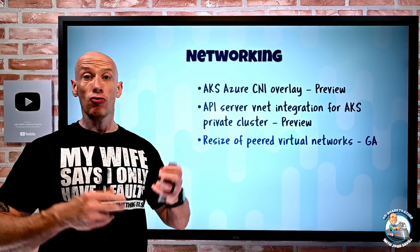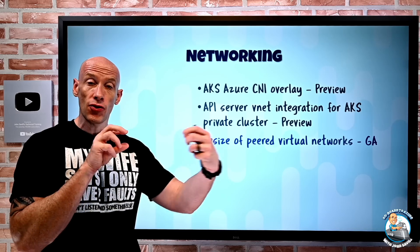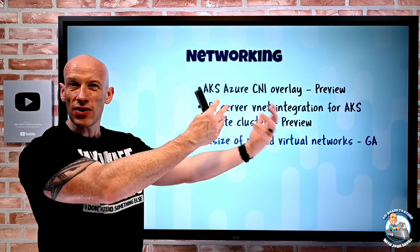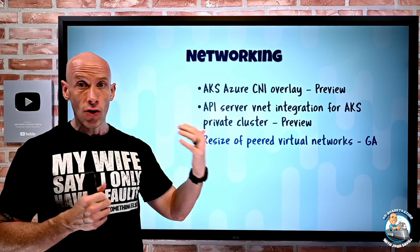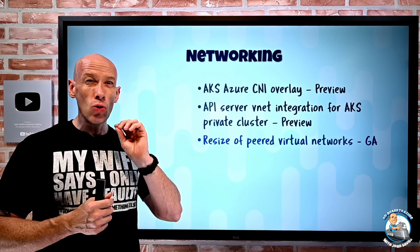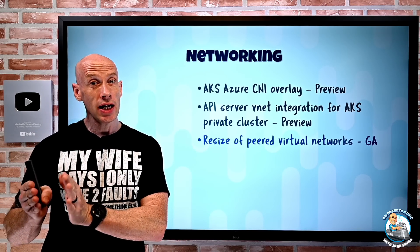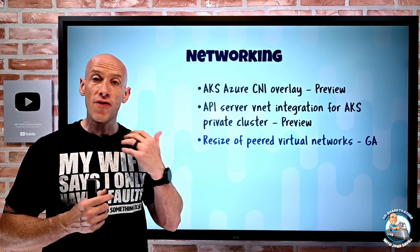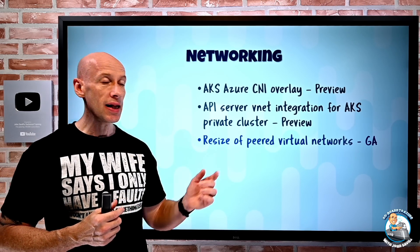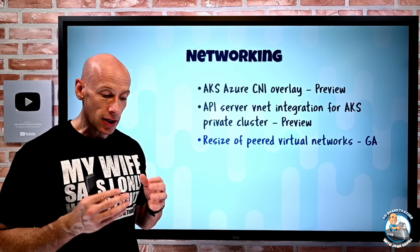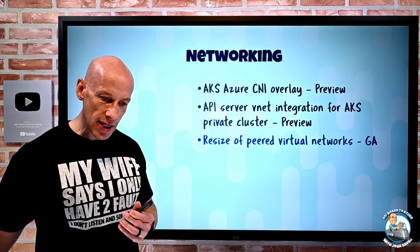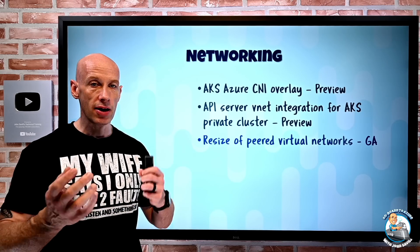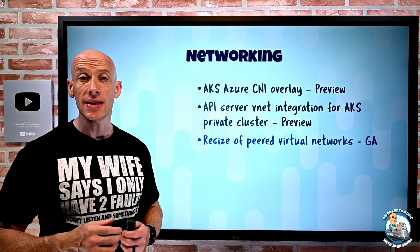For regular virtual networks: as you know, we often peer virtual networks to enable direct communication without going via a VPN. They cannot have overlapping IP ranges, and historically once peered, you couldn't change the IP space or add additional spaces to a VNet. With this new functionality, you can now resize and modify the IP space of a virtual network without having to remove any peers. That is now GA.